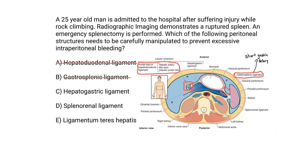The hepatogastric ligament lies between the lesser curvature of the stomach and the liver — that's not going to contain the splenic artery, so we eliminate it. The splenorenal ligament does look like a good answer, so we'll keep that. The ligamentum teres hepatis is a remnant of the umbilical vein, so we can eliminate that as well.